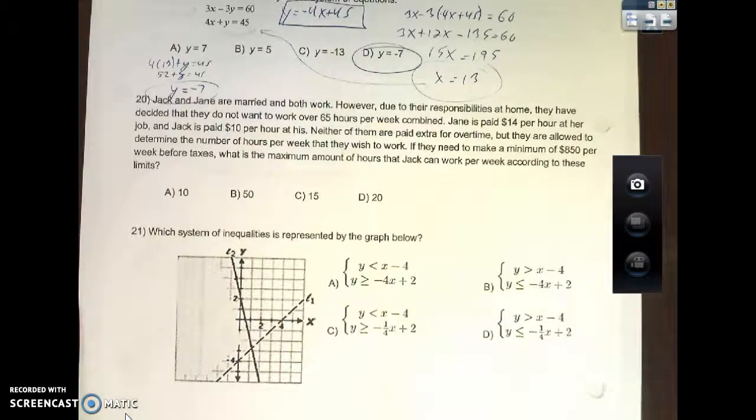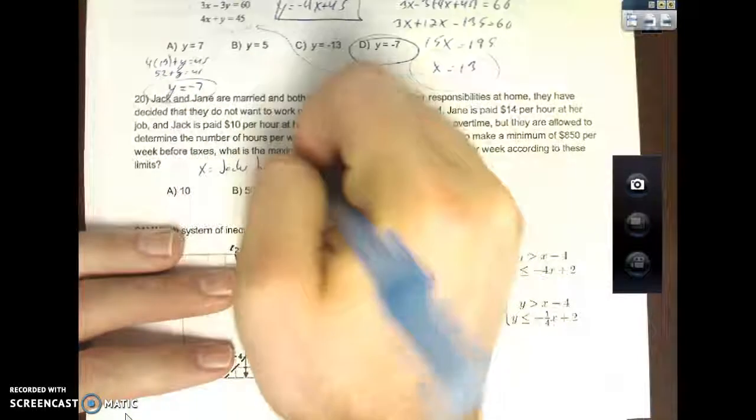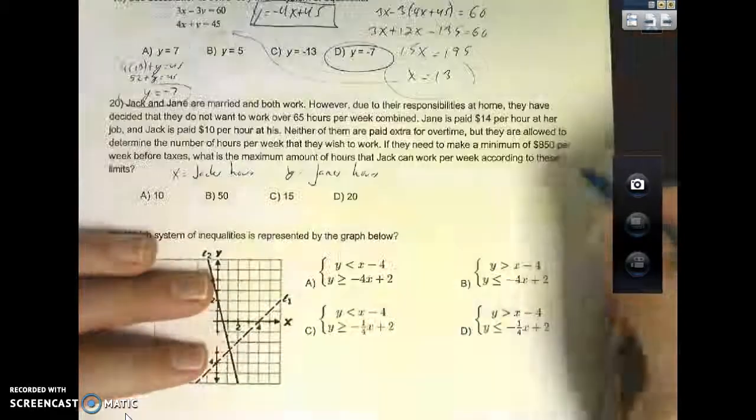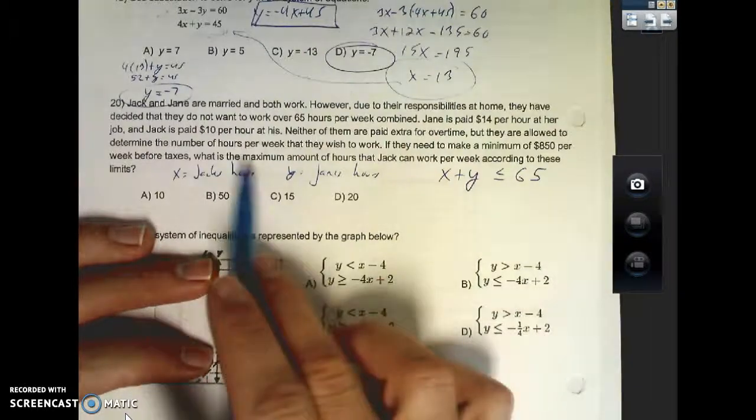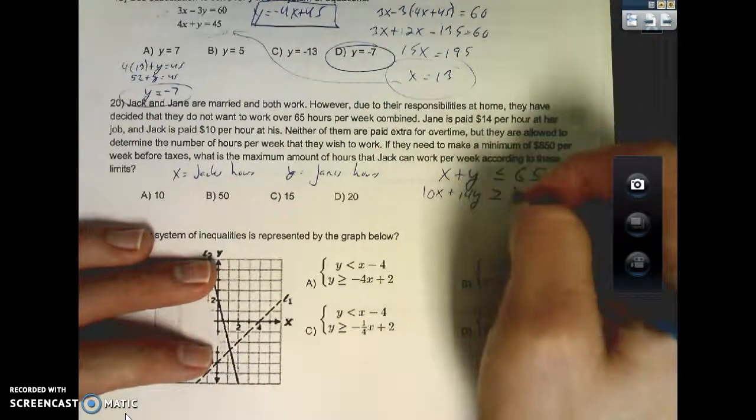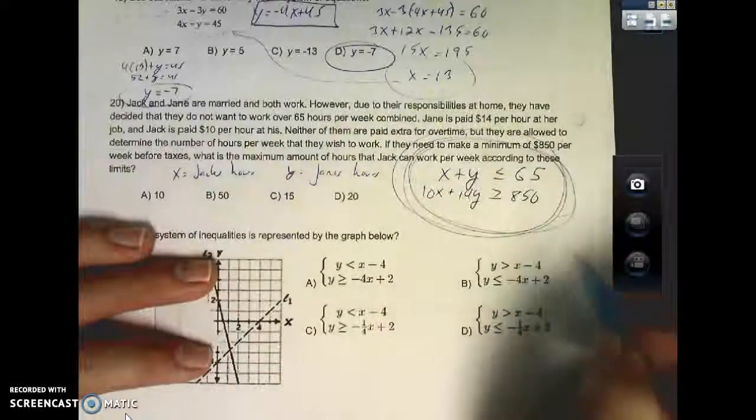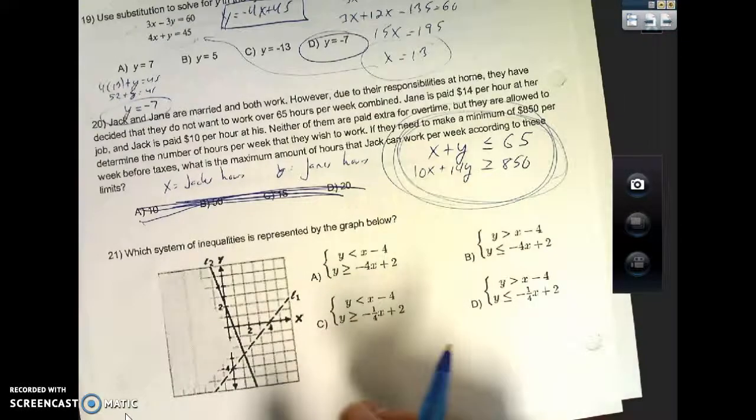Jack and Jane are married and both work. However, due to their responsibilities at home, they have decided that they do not want to work over 65 hours per week combined. Jane is paid $14 per hour at her job and Jack is paid $10 per hour at his. Neither of them are paid extra for overtime, but they're allowed to determine the number of hours per week that they wish to work. If they need to make a minimum of $850 per week before taxes, what's the maximum number of hours Jack can work per week according to these limits? I'm going to say that x equals Jack's hours, y equals Jane's hours. Together they don't want to work over 65 hours, so that means x plus y, their hours combined, need to be less than or equal to 65. Then Jack makes 10 bucks an hour, 10x. And Jane makes $14 an hour, 14y. And they want to make at least $850. This is how we set this up. Please make sure you guys are comfortable with that. I actually just don't like this problem at all, so I just wanted to show you guys how to set the problem up. And you will not have one like this tomorrow on the test.